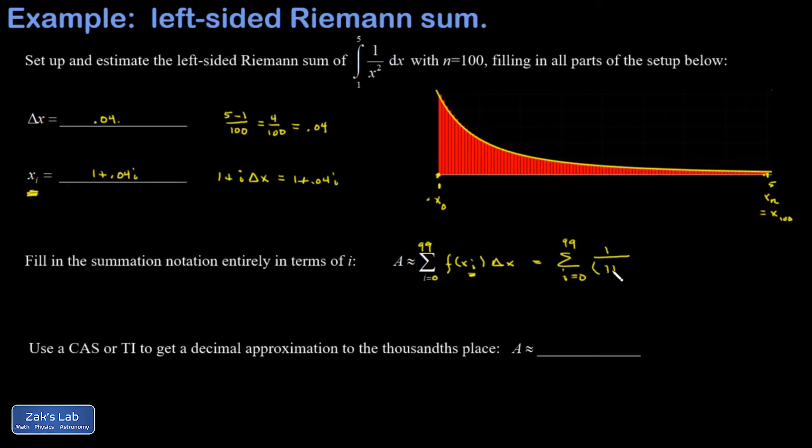So 1 over 1 plus 0.04i squared multiplied by delta x, which is 0.04. So now I actually have a sum that I can explicitly add up and get an approximation for this area.